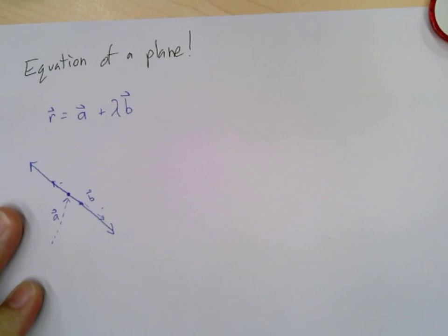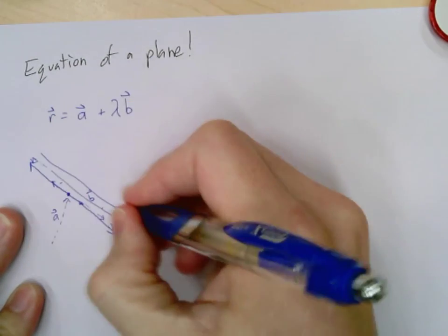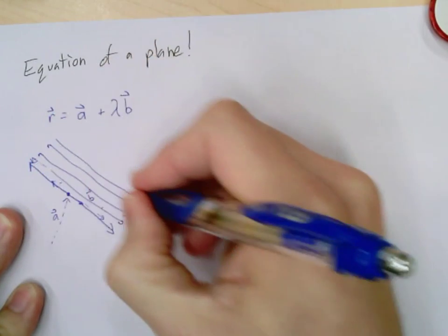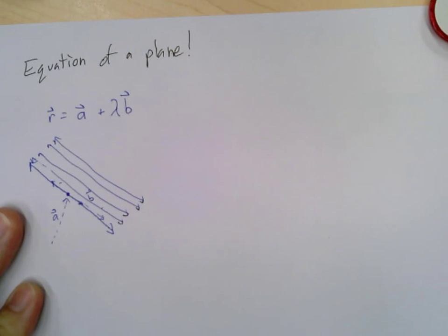But what is a plane? Well, a plane is just a line that has been repeated an infinite number of times in a new dimension. So just taking this and moving it over and over and over again.